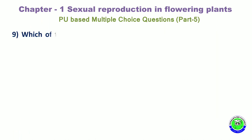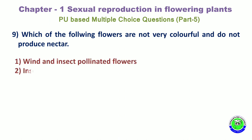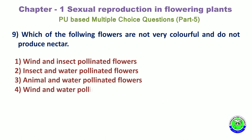Question 9. Which of the following flowers are not very colorful and do not produce nectar? Option 1: Wind and insect pollinated flowers. Option 2: Insect and water pollinated flowers. Option 3: Animal and water pollinated flowers. Option 4: Wind and water pollinated flowers. The correct answer is the 4th option.